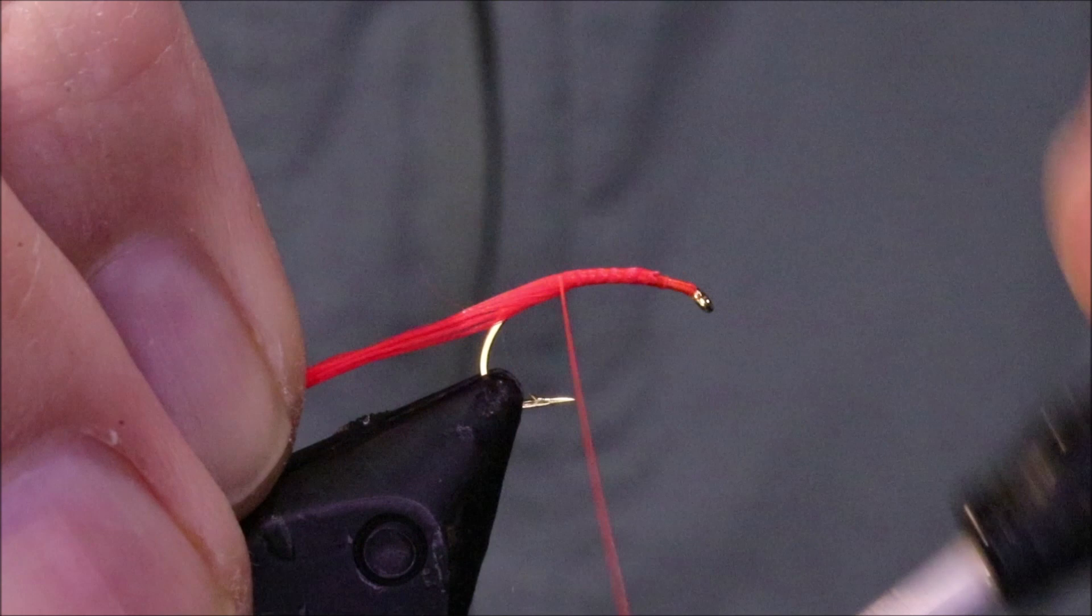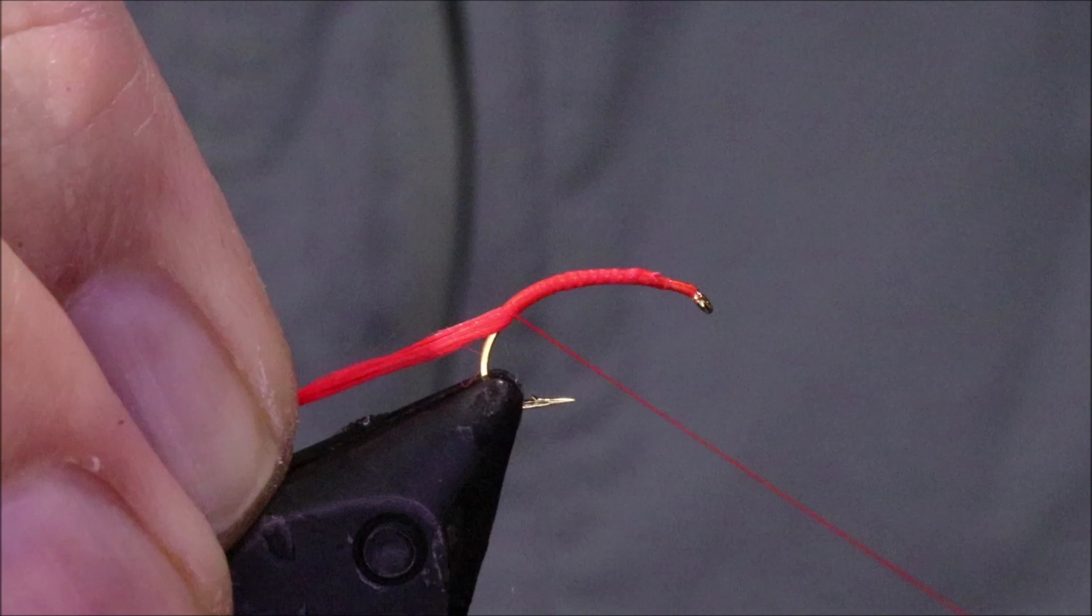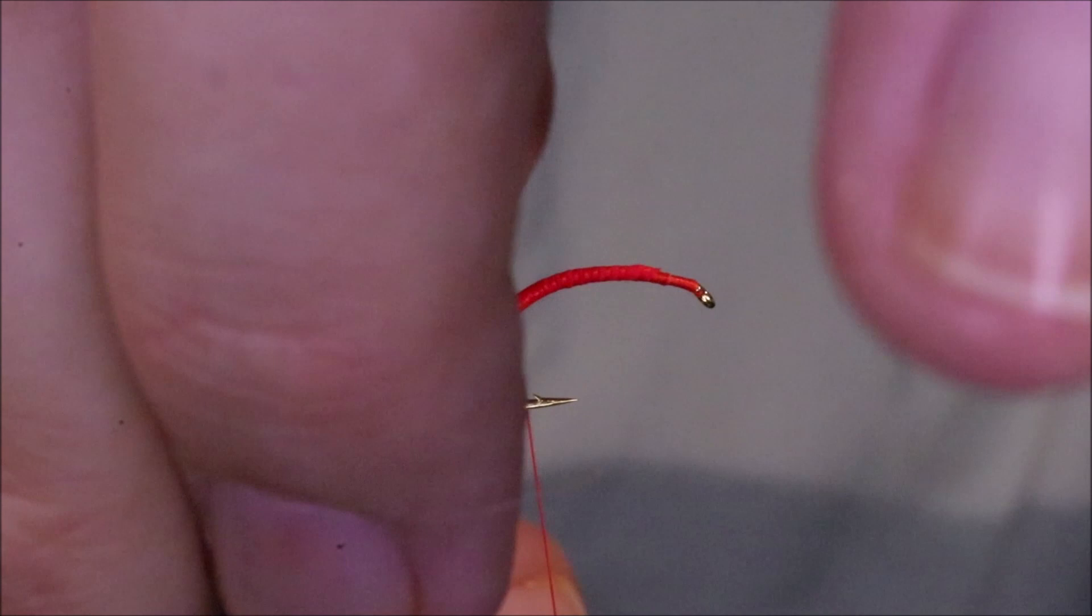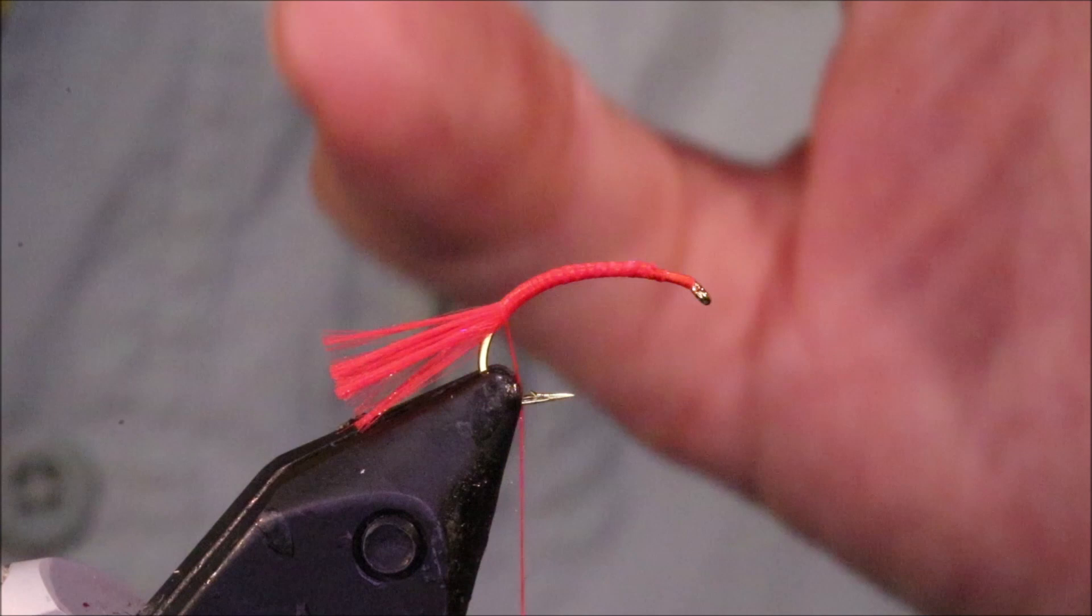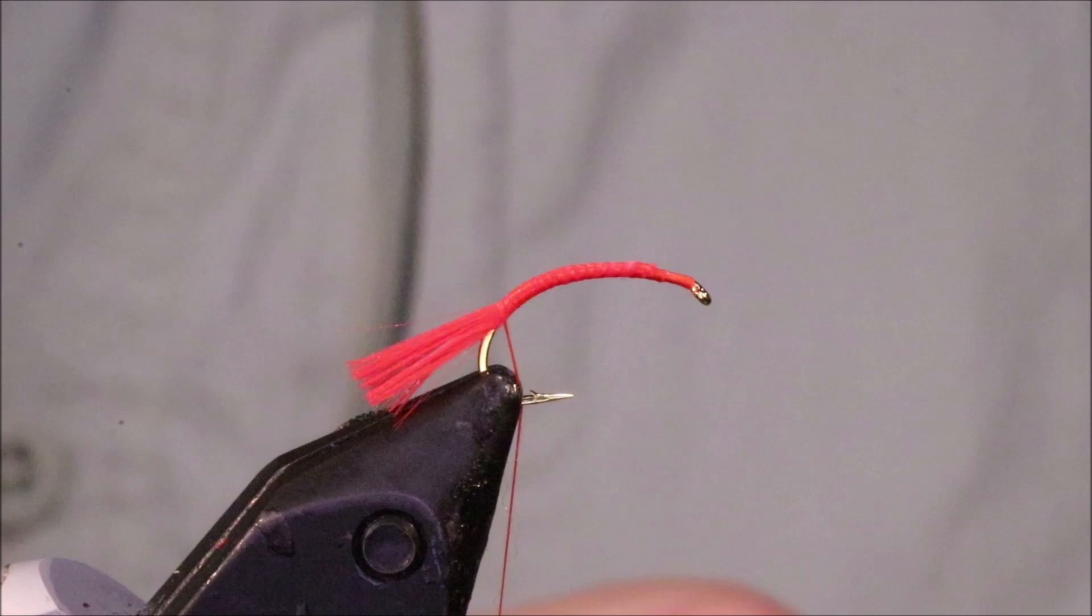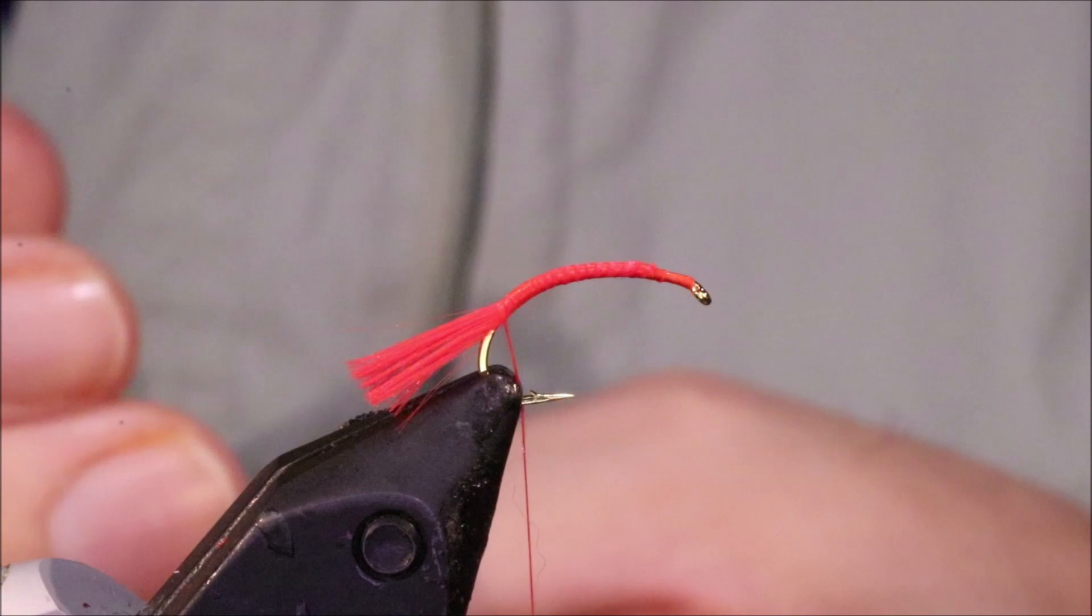I'm tying in for my tag and my tail some Glow Bright number 4 floss, and I've got 10 strands. Leave that tag quite long, it's a bit long there but you can cut it back if you feel it's too big when you're fishing.